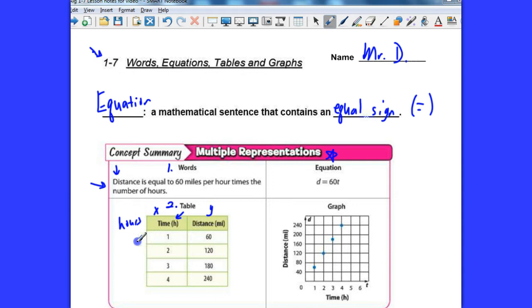And if they drive for one hour, their total distance, that's total, the total distance that they will have traveled would be 60. Makes sense, right? What if they go two hours? How far will they have traveled? They would have gone 2 times 60 to get 120.